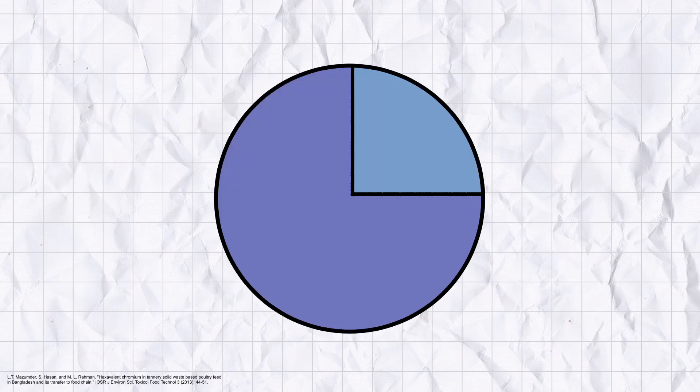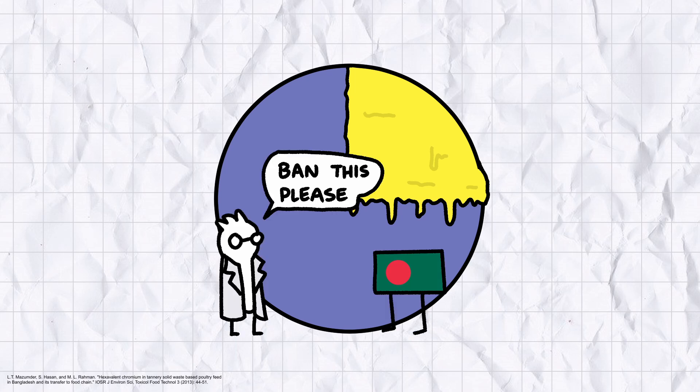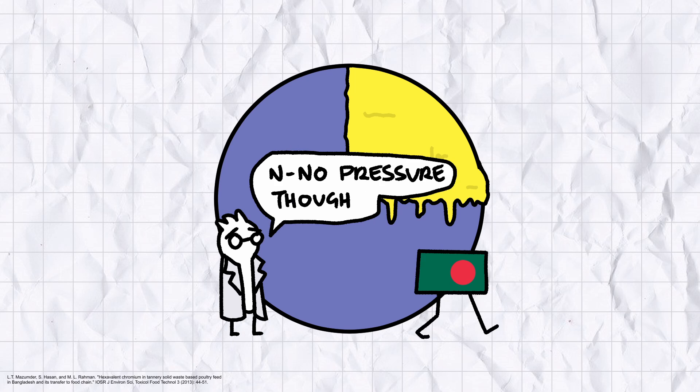A 2013 study estimated that 25% of all chickens in Bangladesh contained harmful levels of Chromium-6 in their livers. The study recommended a ban on the production of animal feed from tanneries, but with the depressing caveat that such a ban would be nearly impossible to enforce in countries like Bangladesh because of how profitable it is for farmers to use cheap toxic feed.